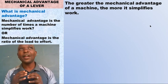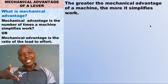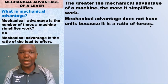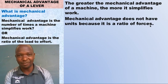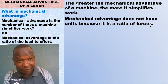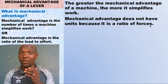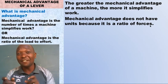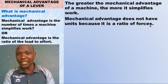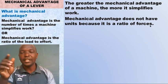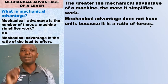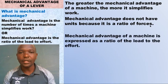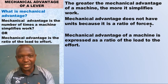The greater the mechanical advantage of a machine, the more it simplifies the work. If you calculate and get a mechanical advantage of two, three, or four, the greater the value, the more that machine will simplify the work. Also, mechanical advantage does not have units. Why? Because mechanical advantage is a ratio of forces — you are dividing the force of load by the effort, and if both have the same units, the units cancel out.